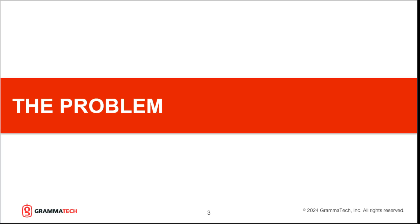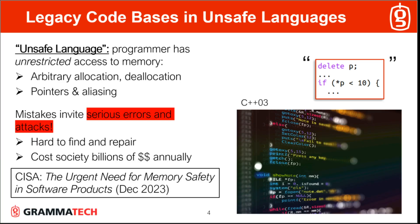Let me give you a few more details on CRAM, beginning with the problem it addresses. This is all about legacy code bases in so-called unsafe languages. In these, the programmer has unrestricted access to memory by explicitly allocating and deallocating memory at arbitrary times during program execution, and accessing it using raw pointers and arbitrary aliasing. This is well known to expose software to attacks, since pointers can point to arbitrary data, including data that were never meant for the program.